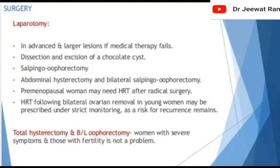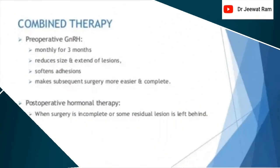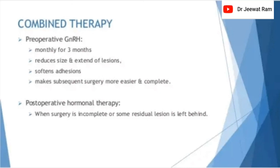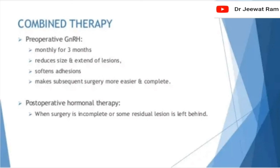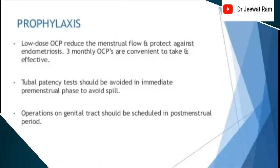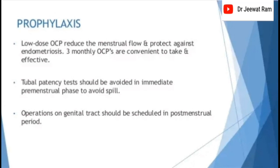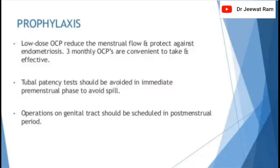Total hysterectomy and bilateral oophorectomy for women with severe symptoms where fertility is not a concern. Combined therapy: pre-operative GnRH analogues monthly for 3 months reduce the size and extent of lesions, soften adhesions, and make subsequent surgery easier and more complete. Post-operative hormonal therapy is used when surgery is incomplete or some residual lesions are left behind. Prophylaxis: low-dose oral contraceptive pills reduce menstrual flow and protect against endometriosis. Three-monthly oral contraceptive pills are convenient and effective. Tubal patency tests should be avoided in the immediate pre-menstrual phase to avoid spill, and operations on the genital tract should be scheduled in the post-menstrual period.